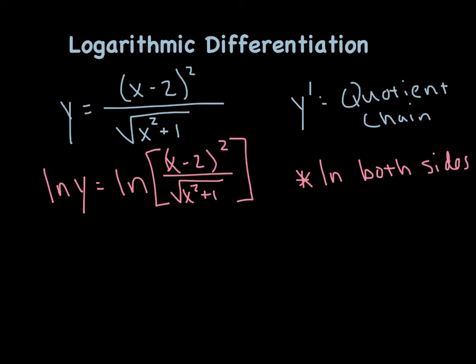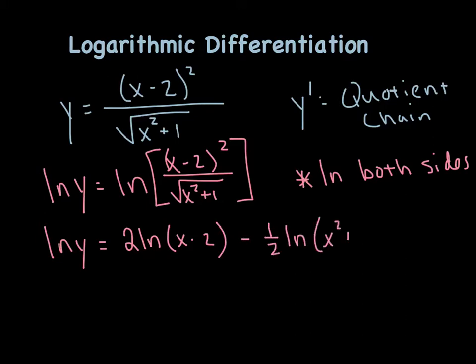You're wondering why we'd introduce natural logs if we didn't have to. Well, we're going back to algebra 2 and taking advantage of all our log properties. We're going to expand this expression out — minus one half times the natural log of the quantity (x squared plus 1). Up until this point, I haven't done a lick of calculus. Not one bit of calculus.